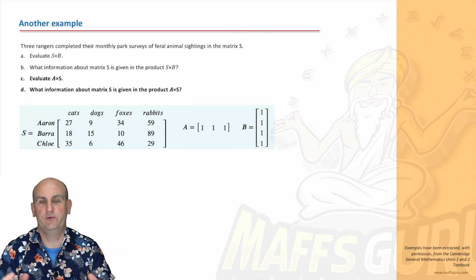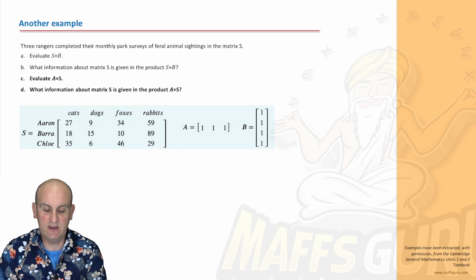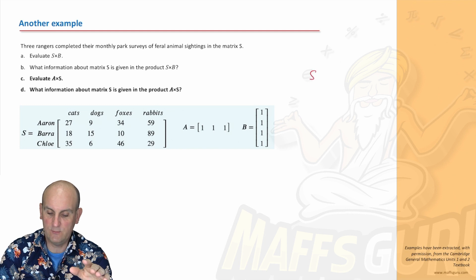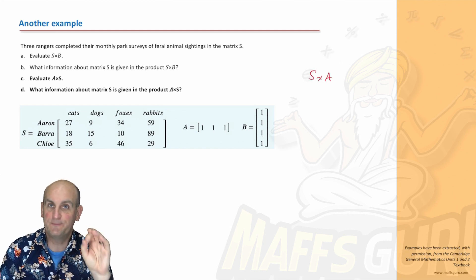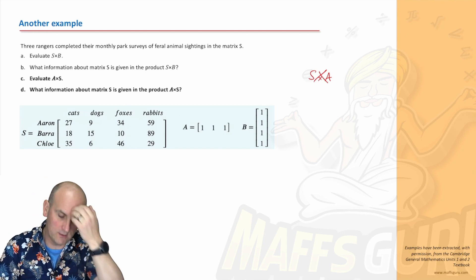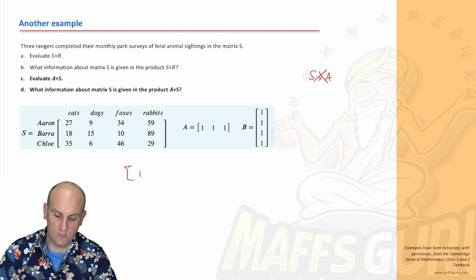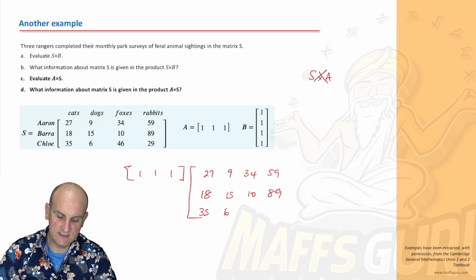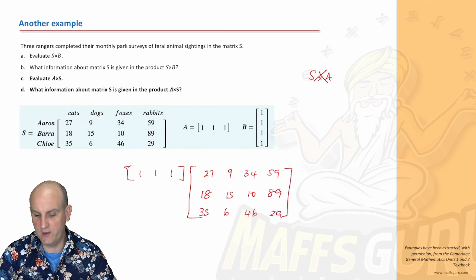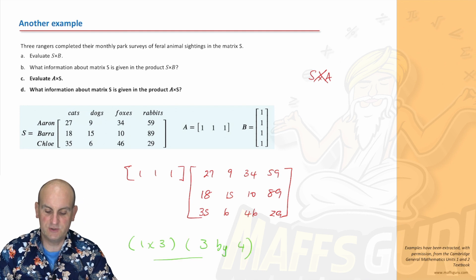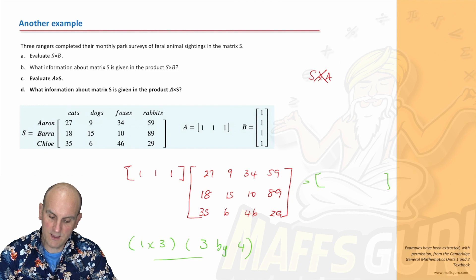Moving on to this, we have to notice and not get tricked. The question is, how did I know it didn't work? When I did S times A, I checked the order of the matrices to see if they were defined, then realized it wasn't defined, and that I must have made a mistake, which caused me to look back at the question. This time they're asking to do A times S. So let's do that. 1, 1, 1, and we got 27, 9, 34, 59, 18, 15, 10, 89, 35, 6, 46, and 29. Are they defined? Rows 1 by 3, and this one is a 3 by 4. Are they defined? Yes, and that's going to give me a 1 by 4. So 1 row by 4 columns.